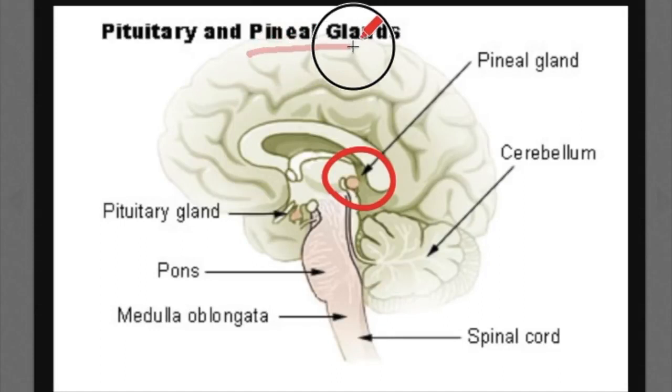The pineal gland is a rice-to-pea sized gland located between the two hemispheres of the brain. It's responsible for a number of very important processes in your body and brain.